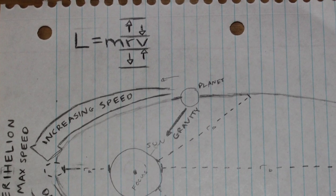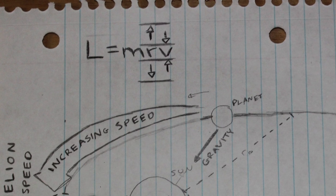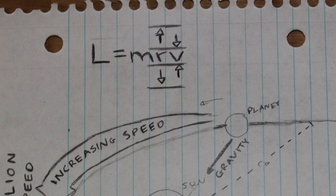As r goes up, v will go down. As r goes down, v goes up. It's an inverse relationship.